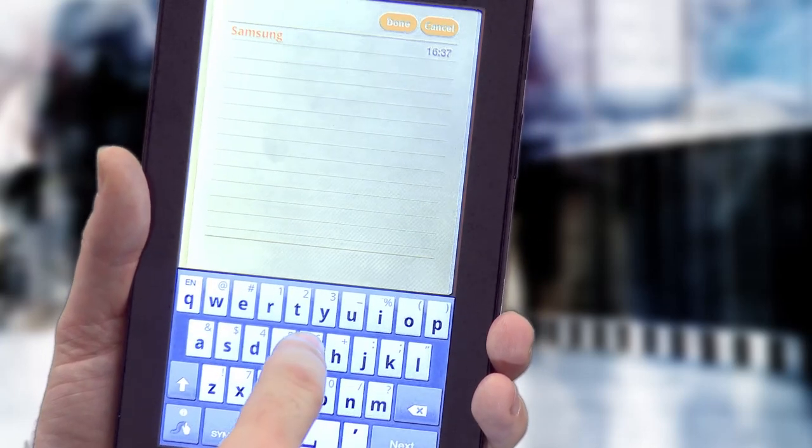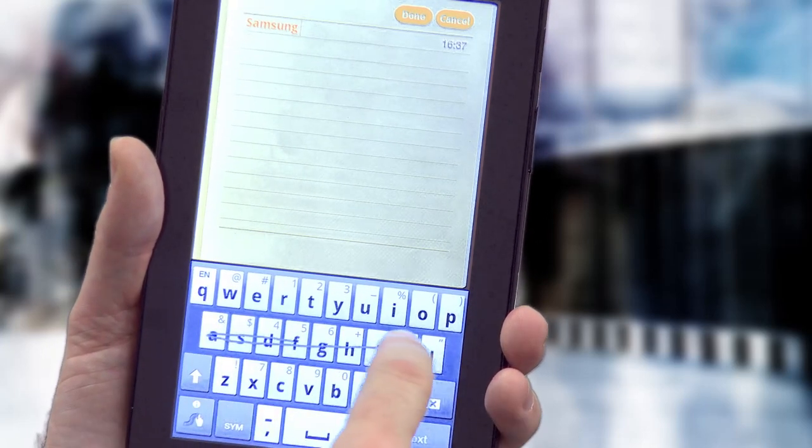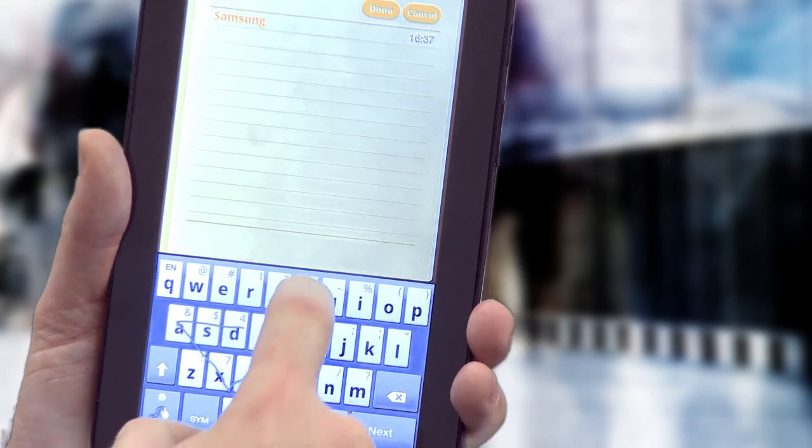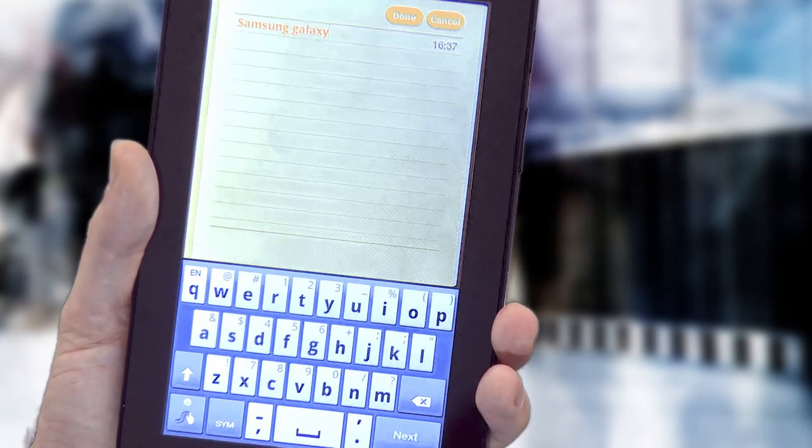You can drag your finger across the screen like so and trace a shape over the letters and it predicts what you want to write.